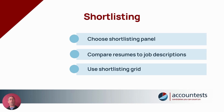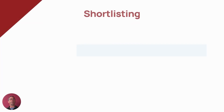Out of that you should hopefully end up with three to five people that you want to take through to interview. These are objective measures that you're looking at — we're not thinking about personality. This is really about whether they've got those key requirements that you listed in the job description.